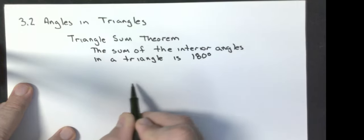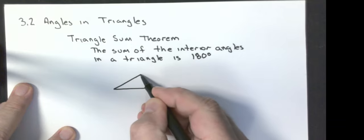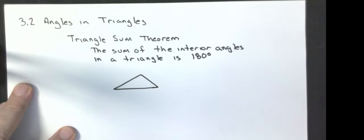And that says the sum of the interior angles in a triangle is 180 degrees. So that makes us ask, okay, what is an interior angle and what is an exterior angle? Well, if I draw a triangle, the interior angles are those that are on the inside.